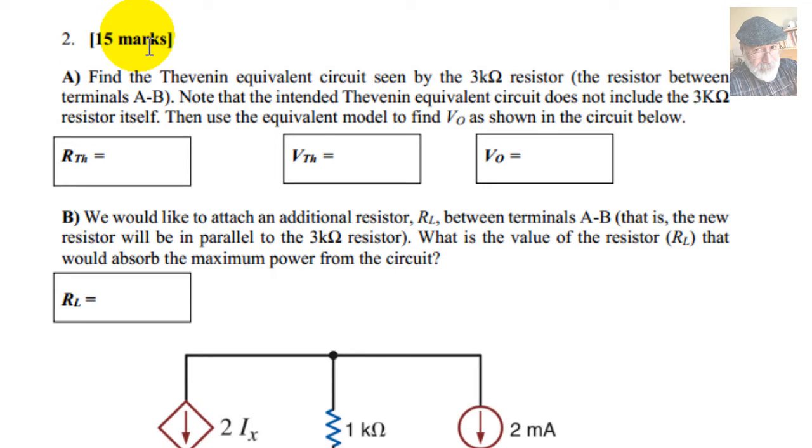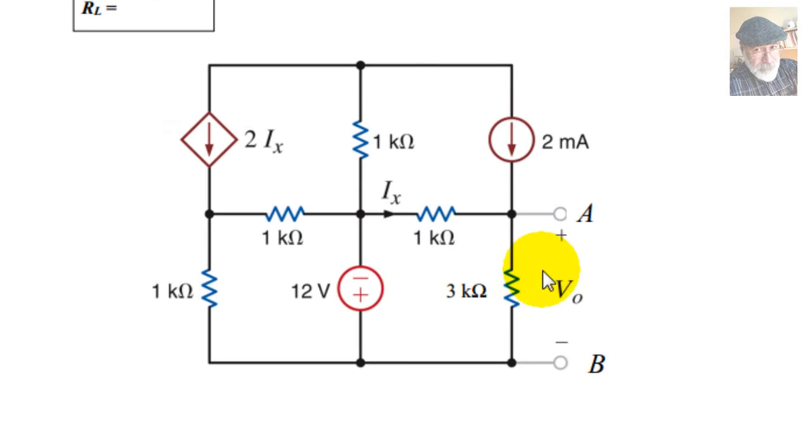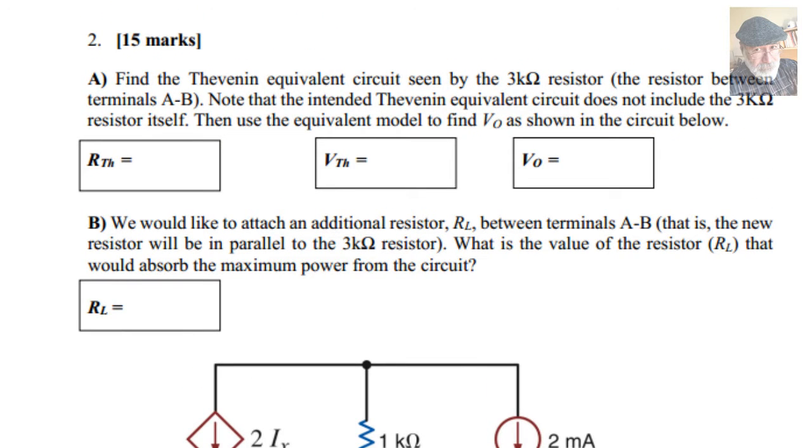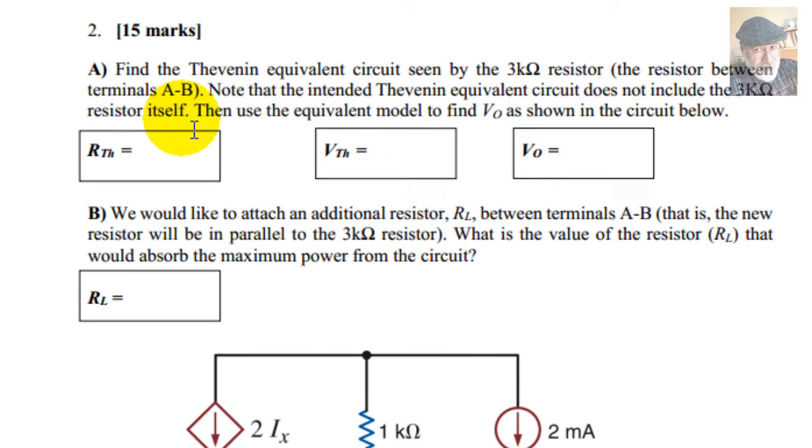For 15% of the value of the exam, find the Thevenin equivalent circuit seen by this 3kΩ resistor, the resistor between terminals A and B. And it goes ahead and insists, note that the intended Thevenin equivalent circuit does not include the 3kΩ resistor itself.